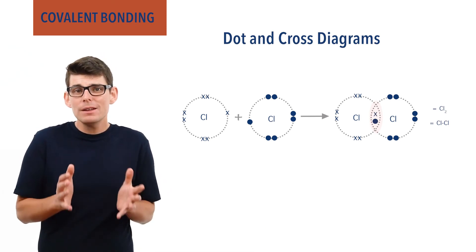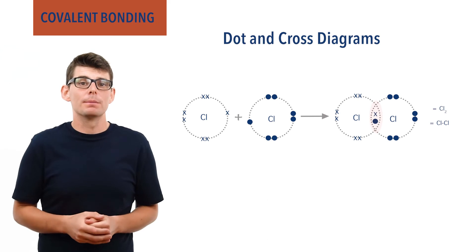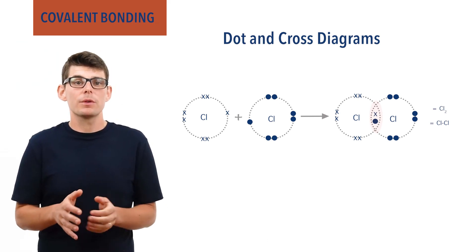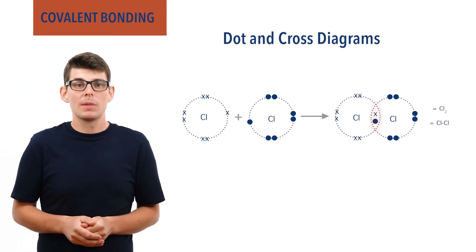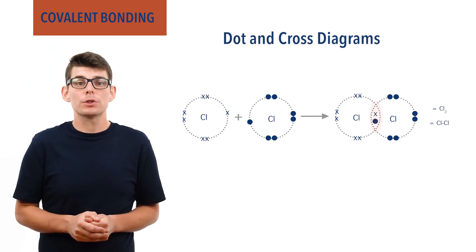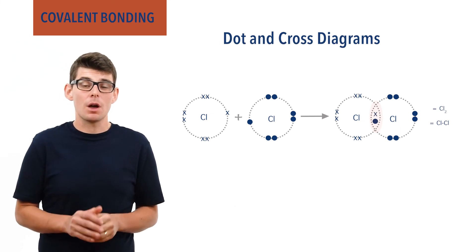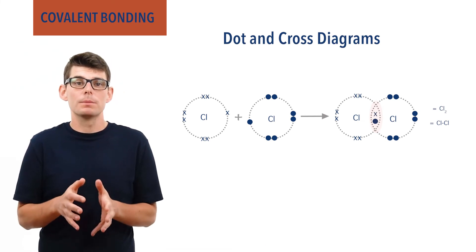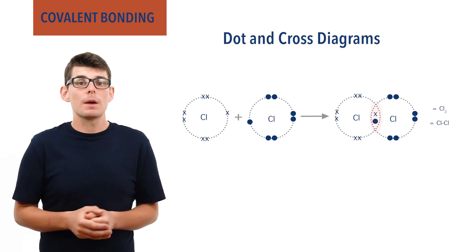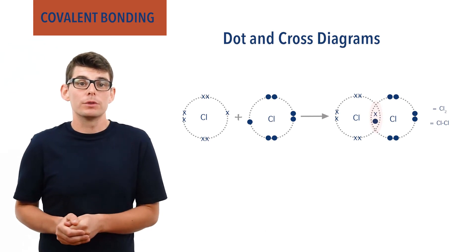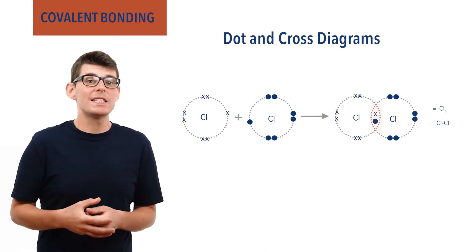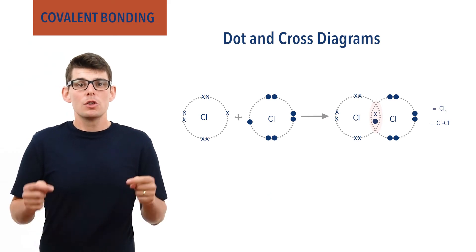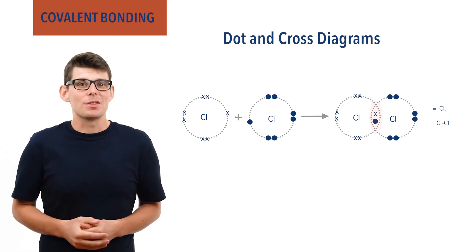Some covalent bonds can form where both electrons in the bond have come from one atom. In this situation, dot and cross diagrams are incredibly useful to help track how the bonds are being formed. These types of covalent bonds are called coordinate or dative covalent bonds and have been covered in a separate video.